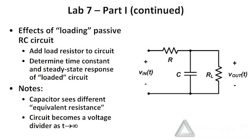If we've designed a passive RC circuit to give us some time constant and some DC gain, and then connect that RC circuit to some other stage of an overall system, we can end up changing the response of our original RC circuit, because the capacitor is seeing a different equivalent resistance, which changes the time constant.